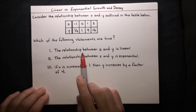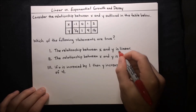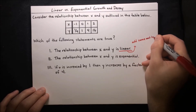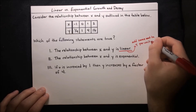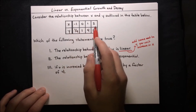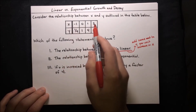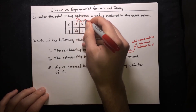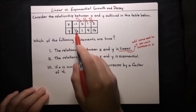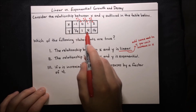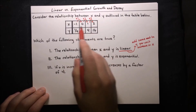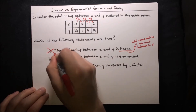Let's start with statement one: the relationship between x and y is linear. Linear means that we add the same amount to y per unit increase in x. x goes from negative 1 to 0 to 1 to 2 — unit increases. Looking at y: from one-fourth to 1 is an increase of three-fourths; from 1 to 4 is an increase of 3; from 4 to 16 is an increase of 12. We're not adding the same amount, so the relationship is not linear.